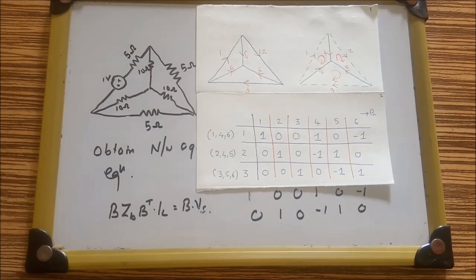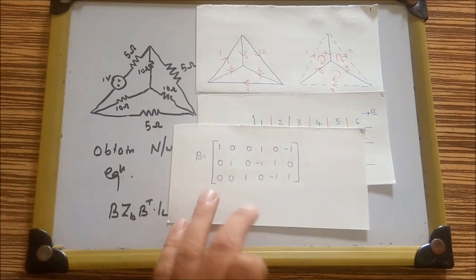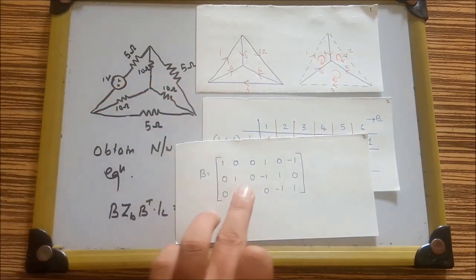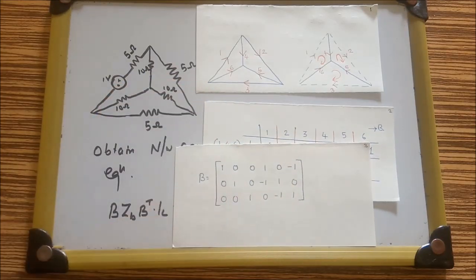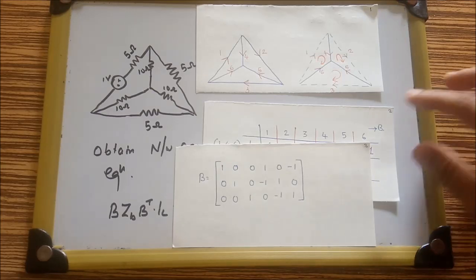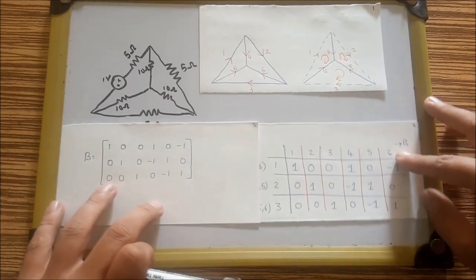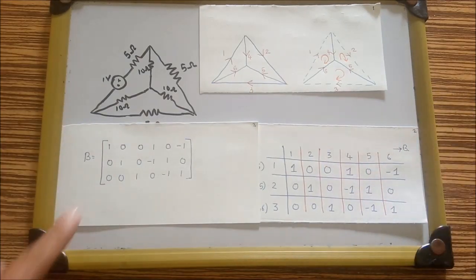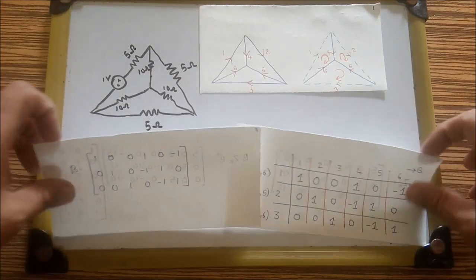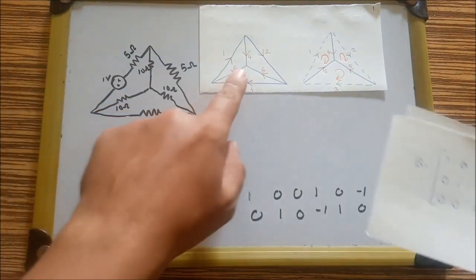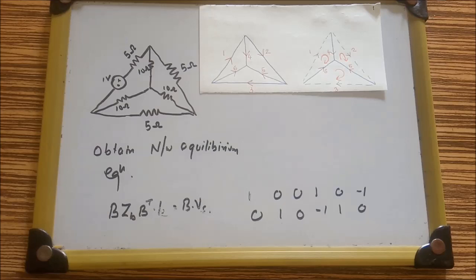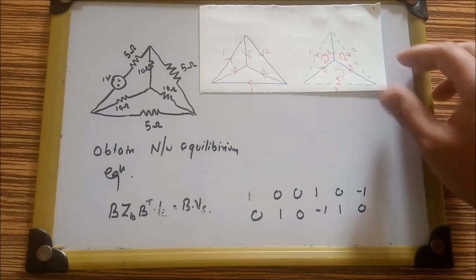So the tie-set matrix B is a 3×6 matrix: Row 1 (loop 1): [1, 0, 0, 1, 0, -1]; Row 2 (loop 2): [0, 1, 0, -1, 1, 0]; Row 3 (loop 3): [0, 0, 1, 0, -1, 1]. This matrix B is then transposed to get Bᵀ. So far we have drawn the graph, the tree, and found the tie-set matrix B.